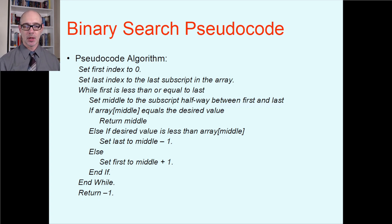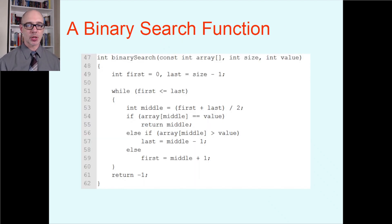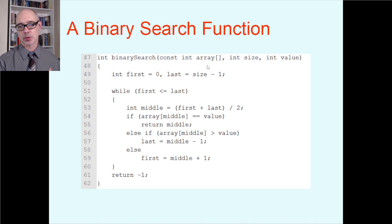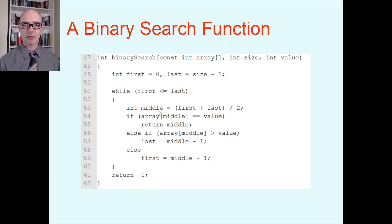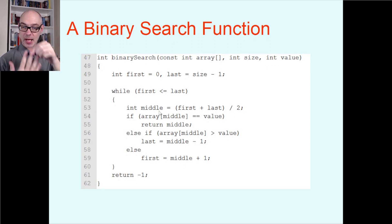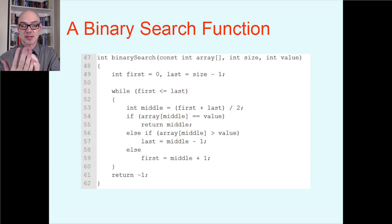Here is the C++ translation. The function is called binary search. It returns an integer — the index where you found the value, or negative one if it's not there. It takes the same three parameters as linear search: an array, the size of the array, and the value being hunted for. Set first to zero, last to size minus one. Keep going while first is less than or equal to last. Each iteration, find the middle by averaging the beginning and ending indices, check whether that's the target, then update either first or last based on whether the target is less than or greater than the middle value.